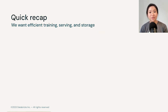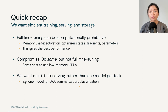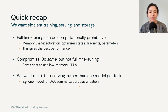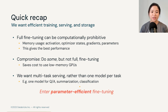Now that you've seen a few examples of fine-tuned models, let's recap the goals we want to accomplish. We want efficient training, efficient serving, and efficient storage. Usually, full fine-tuning is computationally prohibitive for many organizations, even though it gives the best model performance. So the compromise for those with smaller budgets is to do some fine-tuning but not full fine-tuning. We also want this LLM to be able to do multi-task serving rather than serving one model per task at deployment time. We will enter parameter-efficient fine-tuning in the next section and go over some of the most popular techniques.